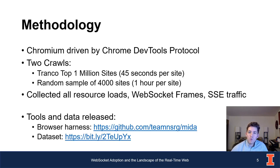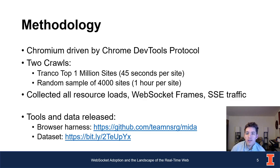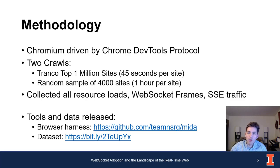To address these questions, we gathered a dataset using a crawler based on Chromium driven by the DevTools protocol. We had a main crawl of the Alexa top million websites where we remained on each site for 45 seconds, supplemented by a crawl of a random sample of 4,000 websites from the top million where we stayed for a full hour. That supplementary crawl was primarily to help study HTTP polling, since connections can be held open for up to five minutes in some browsers. In both crawls, we collected every resource load, all metadata, WebSocket frames, and server-sent event traffic. We've released our dataset and crawling tool.